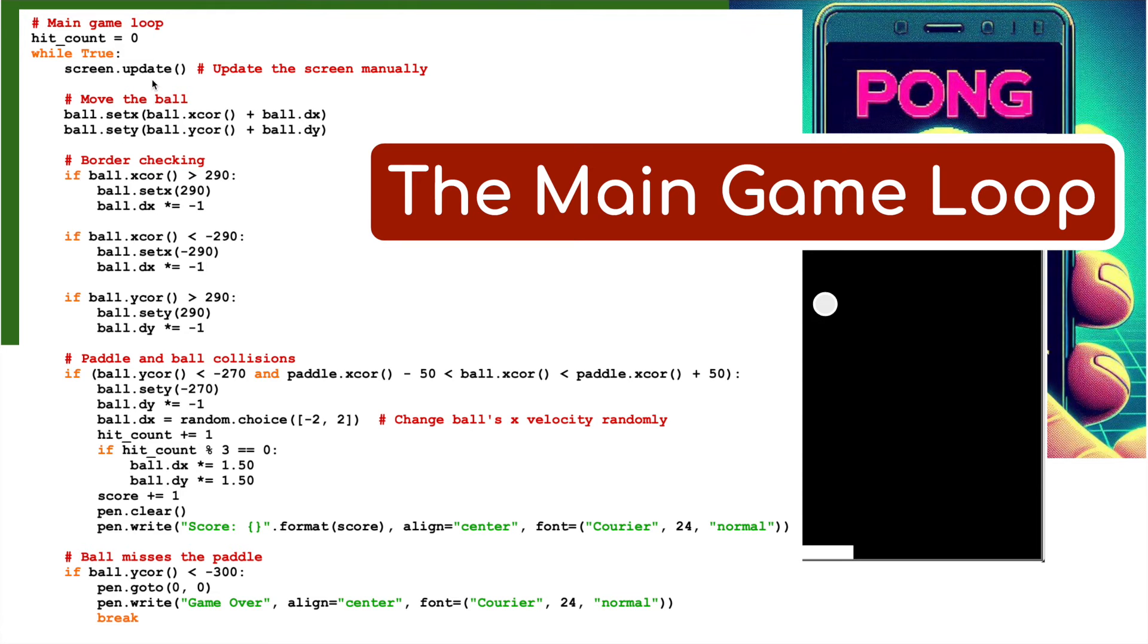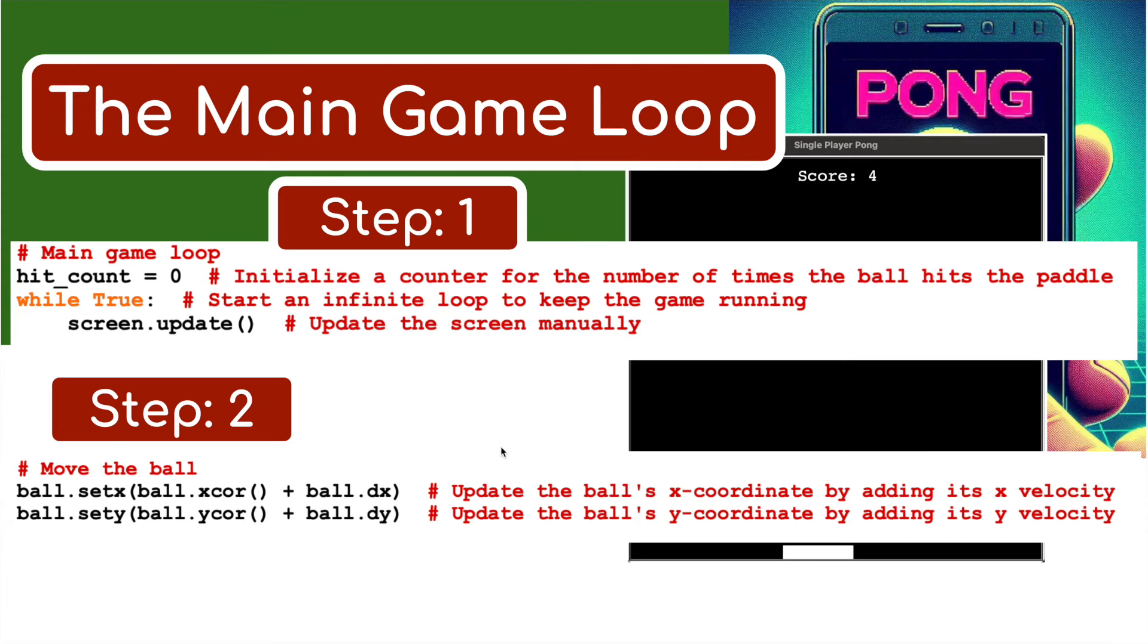Here is the code for the main game loop. We're going to move the ball. We're going to check the border. The paddle and ball collision we're going to set up here. We're going to change the ball's velocity randomly using this line. And if the ball misses the paddle, we're going to call game over. It's going to write using the pen - write game over - and it's going to break and the game will stop. This is the main game loop. Let's break it down.